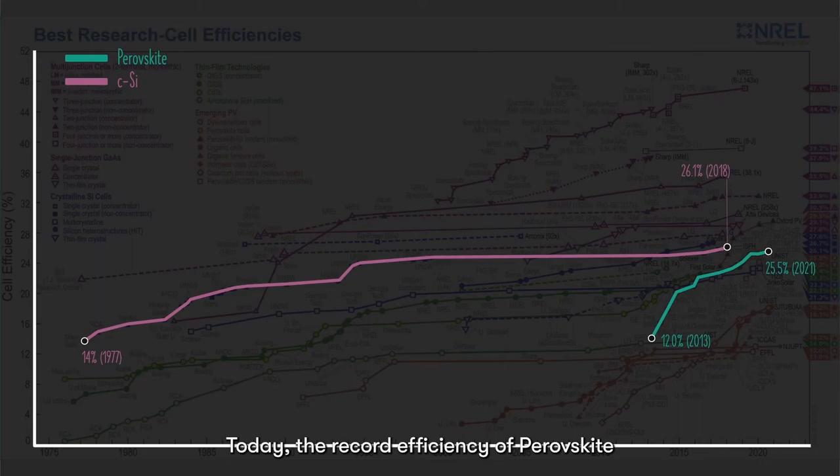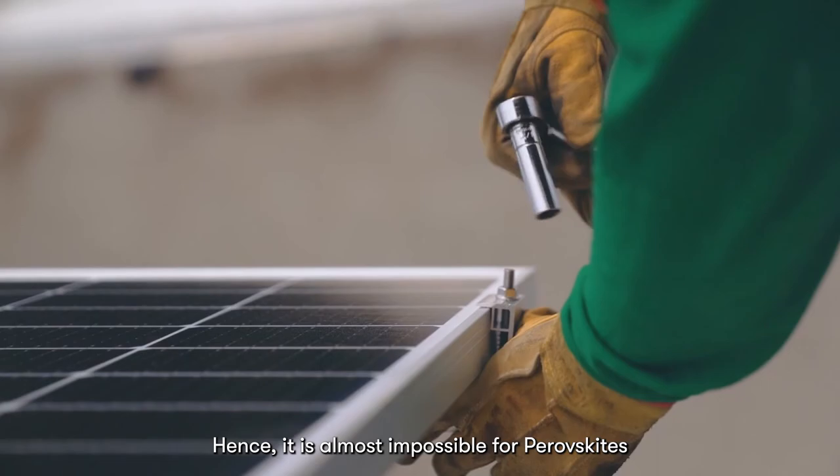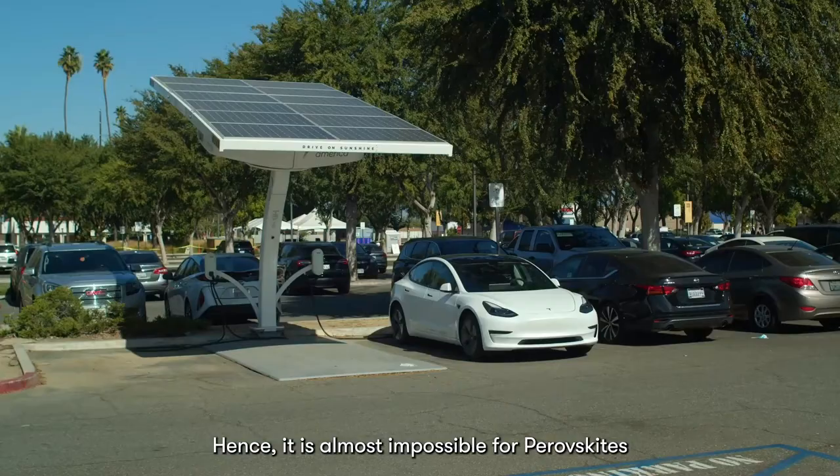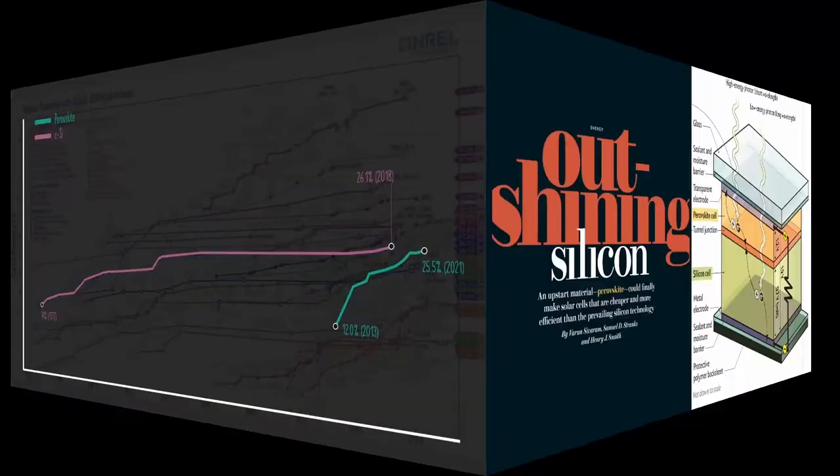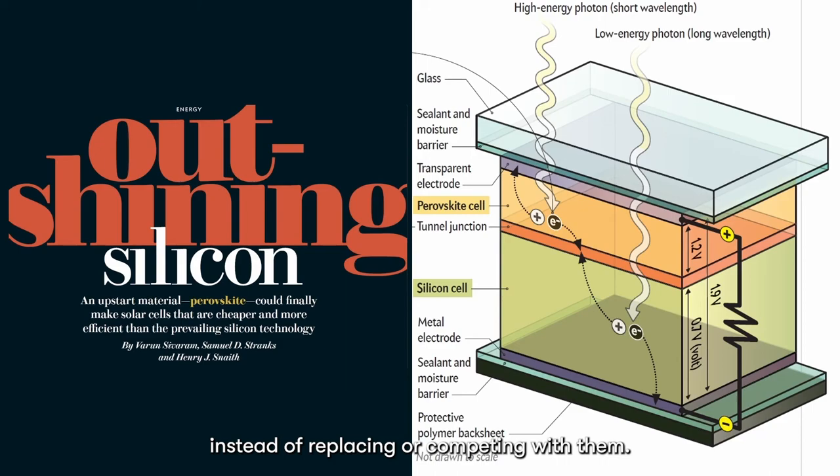Today, the record efficiency of perovskite is already comparable to crystalline silicon. We know that silicon solar cells have a long-standing reputation and huge market capitalization. Hence, it is almost impossible for perovskites to immediately replace silicon cells overnight. This is why efforts today focus on integrating perovskite solar cells with silicon, instead of replacing or competing with them.